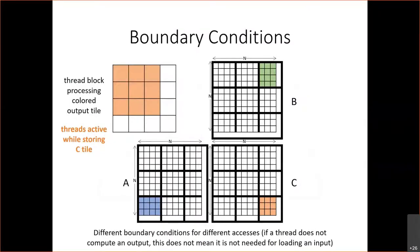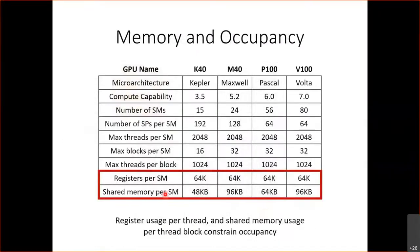Finally, shared memory and register usage impact occupancy because we only have a limited amount of shared memory per SM. How much shared memory we request for our thread block impacts our occupancy — we can't request unlimited shared memory because there's only a fixed amount on the SM. That was a quick overview of what we covered last time.